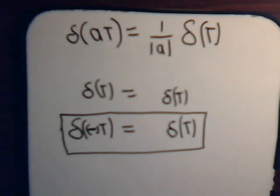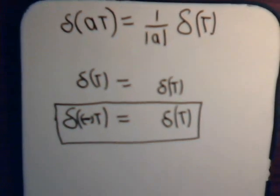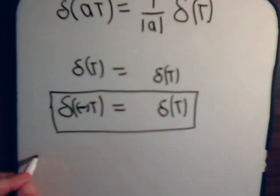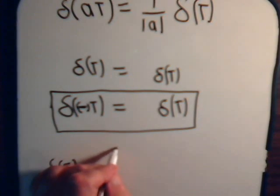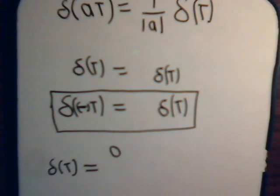Also, if you think back to when we introduced the Dirac Delta function, remember, we said it has this, well, it's a strange function all the way around, where this equals 0 or it's undefined.